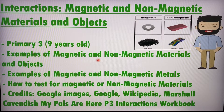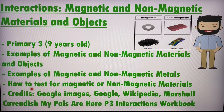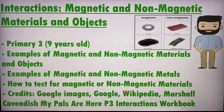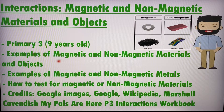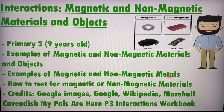I'll talk about examples of magnetic and non-magnetic materials and objects. I'll also talk about examples of magnetic and non-magnetic metals, and I will talk about how you can test whether a material is magnetic or non-magnetic. There's a slight difference between magnetic and non-magnetic materials and objects versus magnetic and non-magnetic metals, and I will talk more about these differences later.